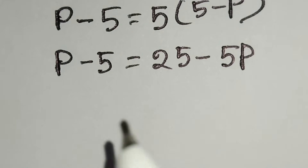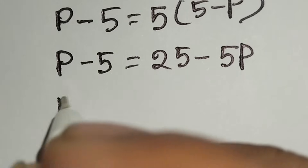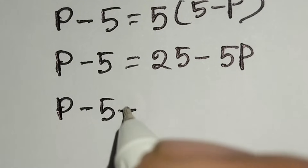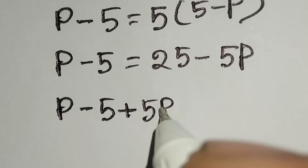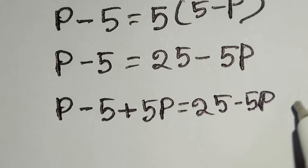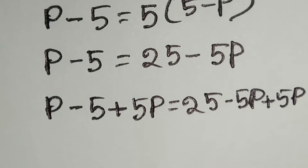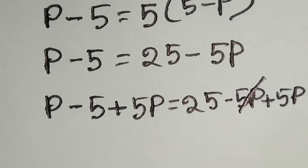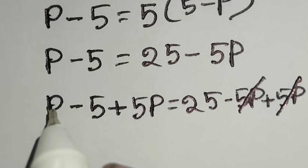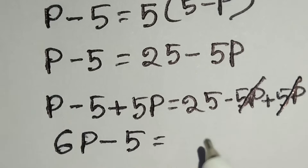Now we'll add positive 5p to both sides, so we can write here p minus 5 plus 5p is equal to 25 minus 5p. The negative 5p cancels with the positive 5p, and p plus 5p is equal to 6p, minus 5 is equal to 25.